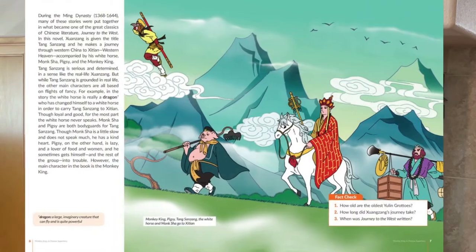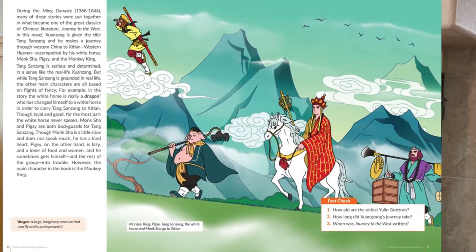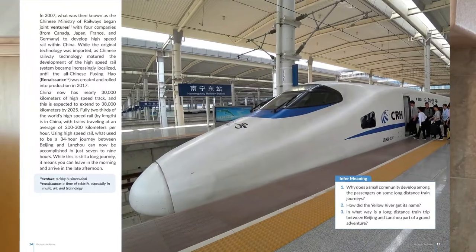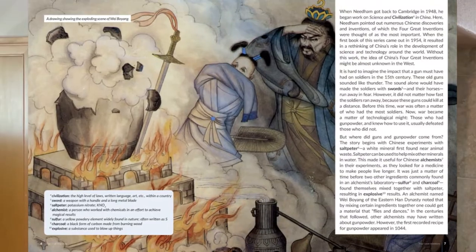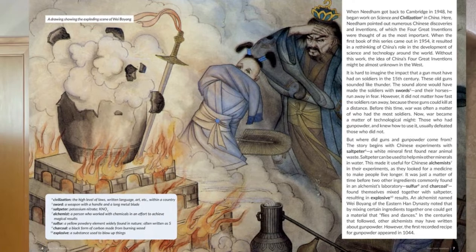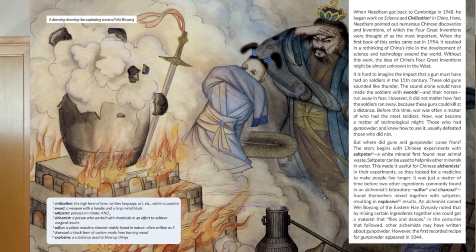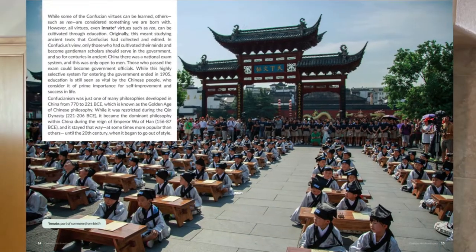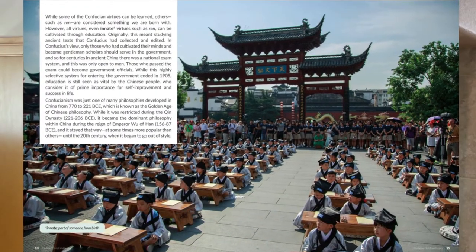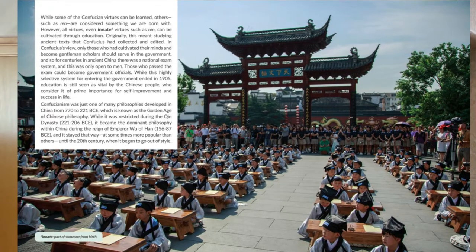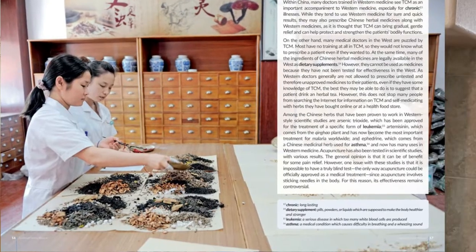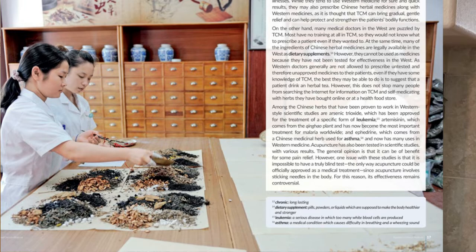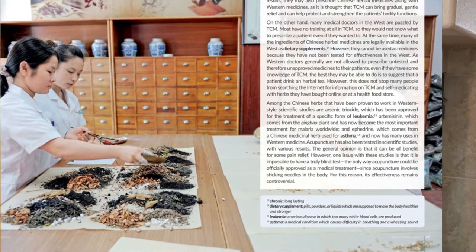The content includes Chinese culture, history, science, and art. It uses natural images and photos alongside text to help students understand the knowledge and vocabulary, and to help students understand the language better.